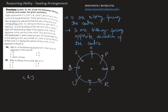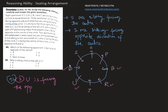Now we need to find the answers for the following questions. Which of the following sportsmen is facing the opposite of the center? The options are B, R, U, and Q. The right answer is U, because U is facing the opposite of the center.